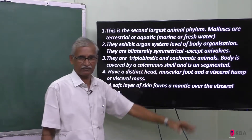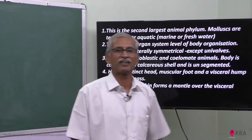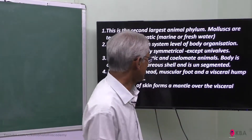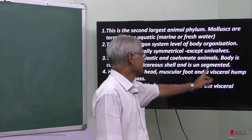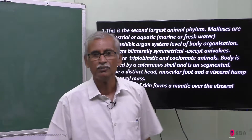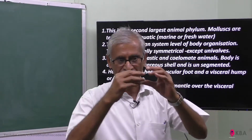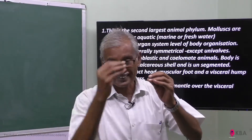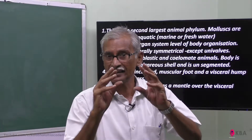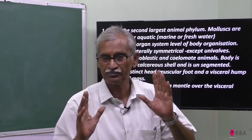Bilaterally symmetrical. They are triploblastic. Bilaterally symmetrical normally, except univalves. What is a univalve? It is one that has a single shell covering — if the shell is a single shell, that is called a univalve.